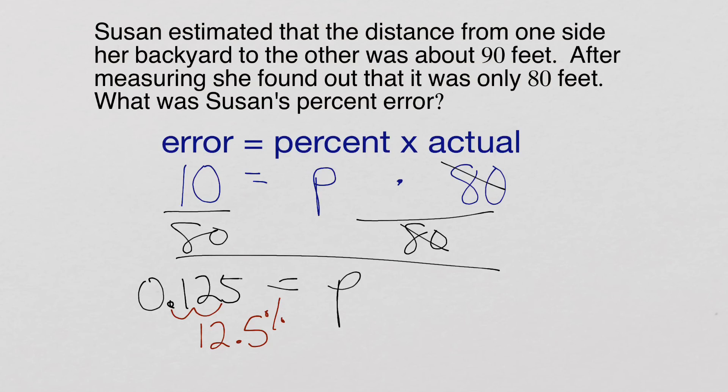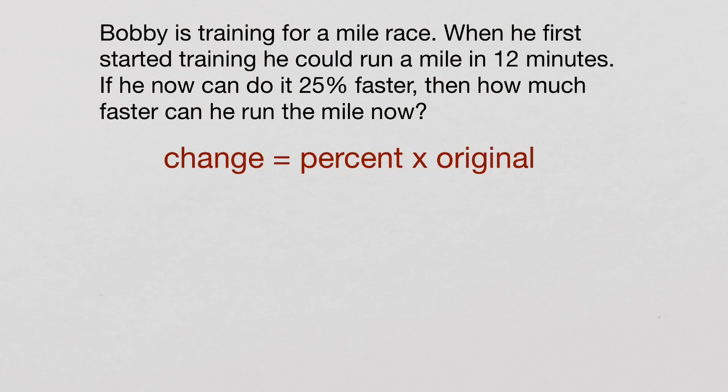I want to give you a quick example where we don't find the percent. Sometimes you're given a percent, like this example here. Here's a percent change question. It talks about Bobby. Bobby's training for a mile race. When he first started training, he could run a mile in 12 minutes. If he now can do it 25 percent faster, then how much faster can he run the mile now?